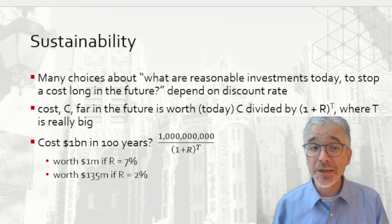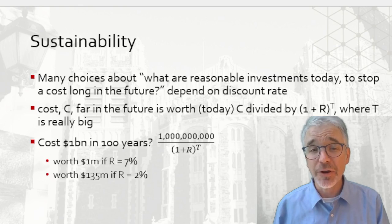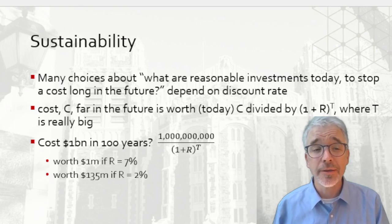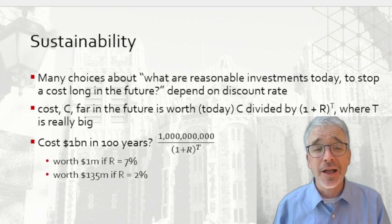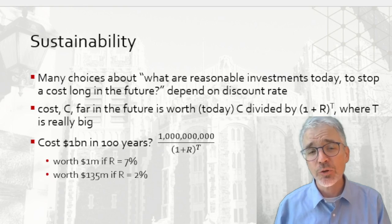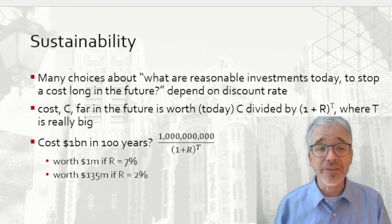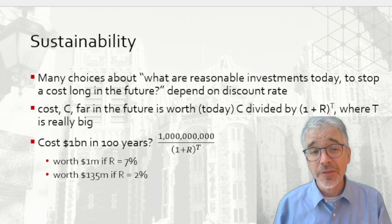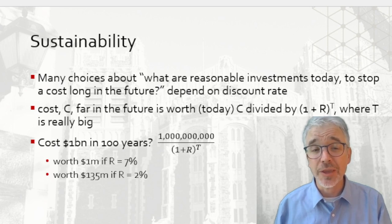If t is really big, any number greater than 1 raised to a very large power gets very big — like the rule of 70 we talked about. Dividing by that large number makes the result really small. For example, a billion dollars 100 years in the future could be worth just $1 million today, or $135 million today, depending on the interest rate used to discount. At a low discount rate, it's worth spending a good deal of money today to avoid that future cost. At a high discount rate, it's not worth spending that much. The MTA makes these decisions as they consider modifications to train stations, knowing that sea levels rise, storms get more intense, and they need better pumps and other adaptations.